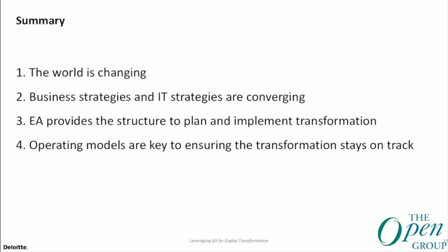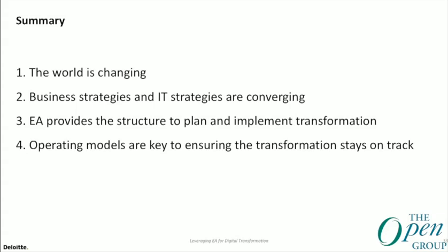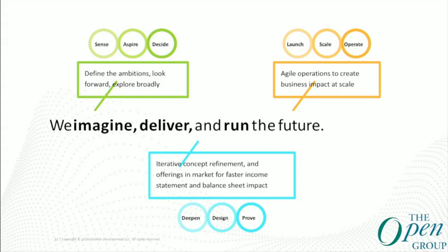In summary, the world is changing — you knew that before you came here. Hopefully, though, you have a few more structures to get your arms around that change. Business strategies and IT strategies are converging at digital. Enterprise architecture gives you the structure to model what that looks like today and in the future. The operating model is the vital piece that's usually ignored, but means the difference between an architecture succeeding or an organization largely staying the same. So: vision the idea, architect the idea, operate the transformation.